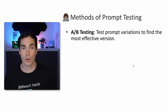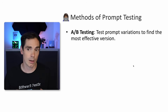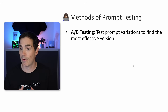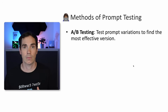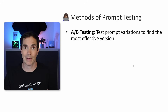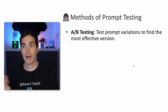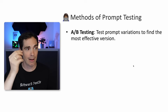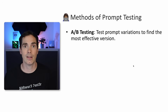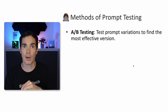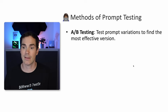Here are some methods of prompt testing. First, you could do A/B testing on prompts — test prompt variations to find the most effective version. For example, if you'd like to generate test cases, you have one prompt and get a result. There might be little tiny tweaks — give more context, change the wording — that get you better results. A/B testing can be very helpful for testing your prompts.